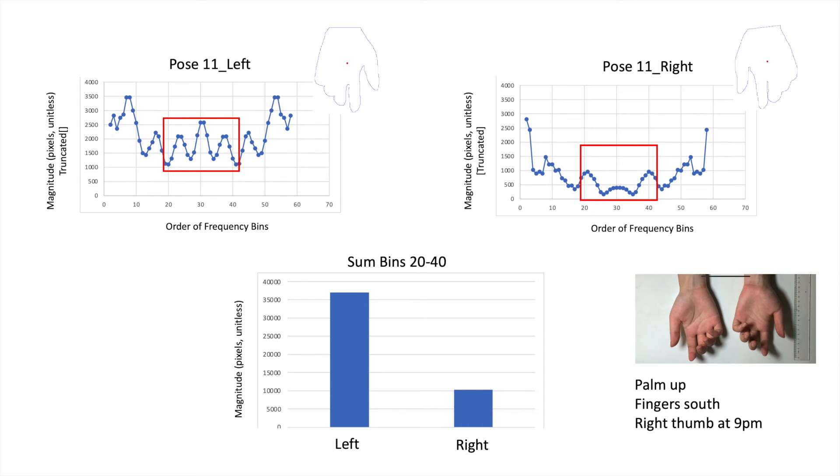Thus far, we have shown that the rules defining left and right work for conditions in which we know the direction of the palm and fingers, along with the location of the thumb.